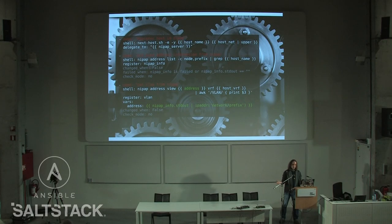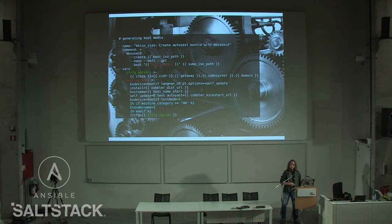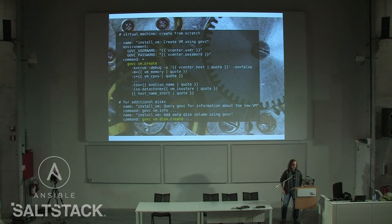Then Cobbler generates the boot medium to run the OS installation and boots the machine — in case of virtual machines, it creates the VM. When Ansible talks to the IP address planner, the easiest way was to just run it on the NIP app server and use the CLI — and one year later, still the same. Same thing with generating boot media: if we want to install SUSE, we just have Ansible go to the Cobbler server and run make SUSE CD, throwing in the IP address data from the NIP app.